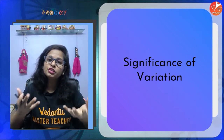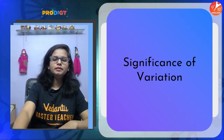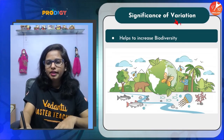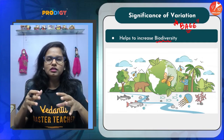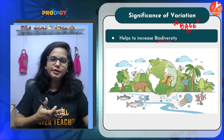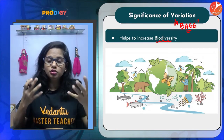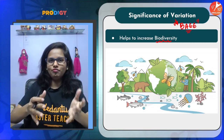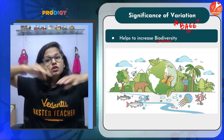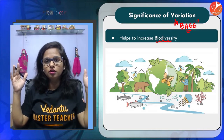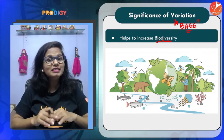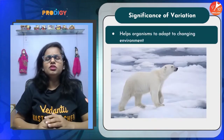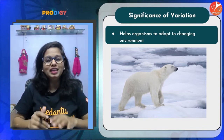Variations can be useful and they can be harmful as well. Let's talk about the useful variations — how they prove beneficial to an organism. The significance of variations can be remembered as B-A-E-E. First, B stands for biodiversity. Life on planet Earth emerged as one single cell — one prokaryotic cell, then eukaryotic, then unicellular, multicellular, aquatic, amphibian, terrestrial, aerial, arboreal. We have so much diversity today. Variation helps in increasing biodiversity.